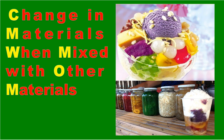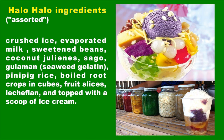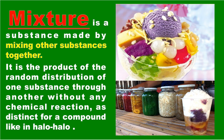Change in materials when mixed with other materials. During hot weather, halo-halo is a favorite food. Have you seen and tasted halo-halo? Look at the picture of halo-halo. What are the materials mixed together to form the mixture called halo-halo? A mixture is a substance made by mixing other substances together — the product of the random distribution of one substance through another without any chemical reaction, distinct from a compound.